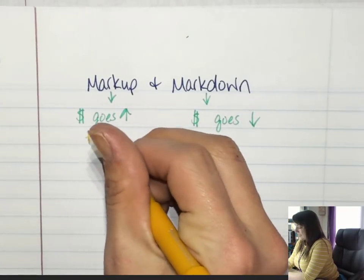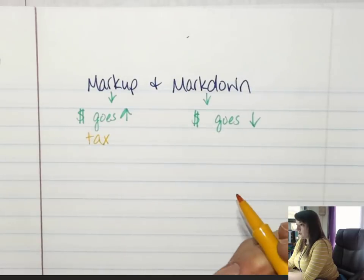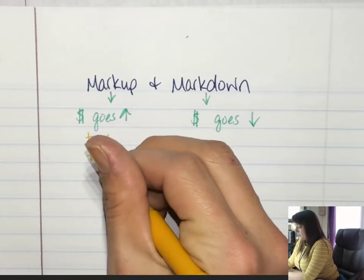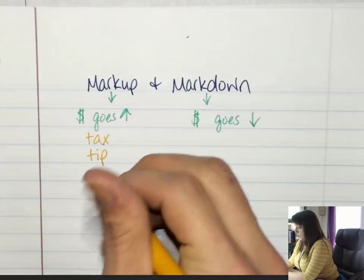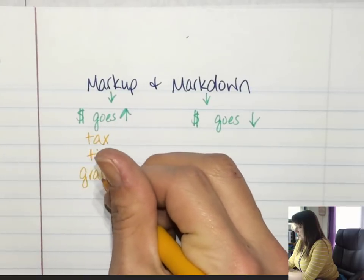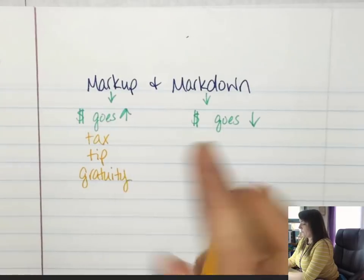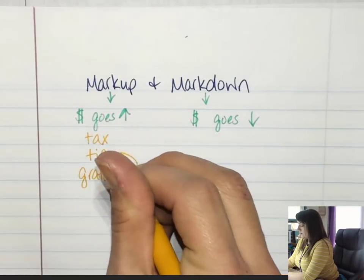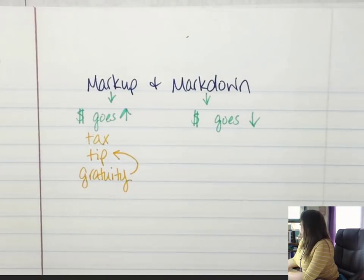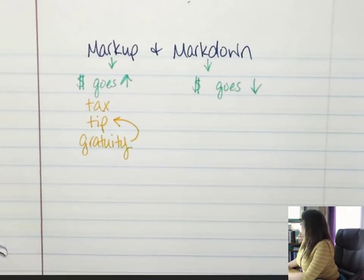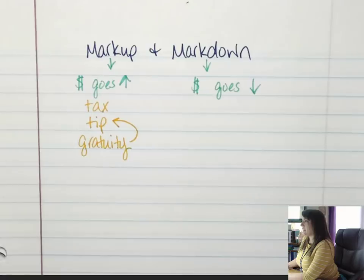Markups are going to be called taxes, tips, gratuity. Gratuity is another name for tip, but you don't usually get to pick how much gratuity you leave.